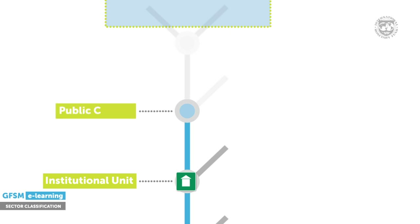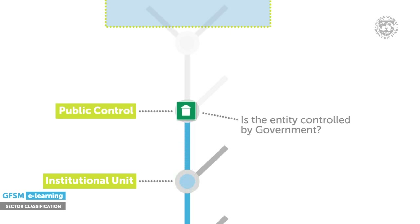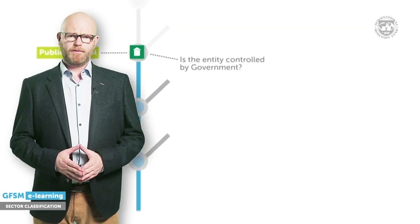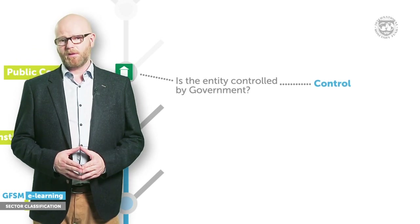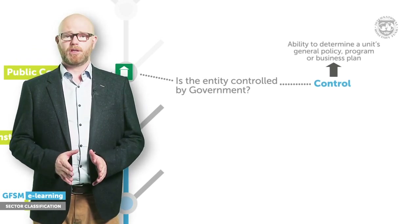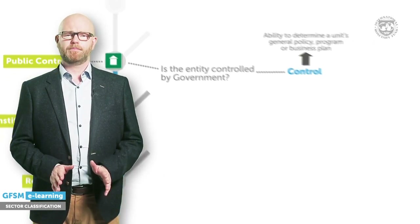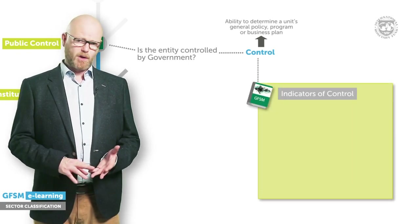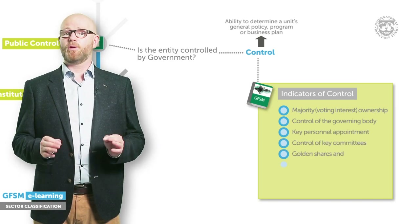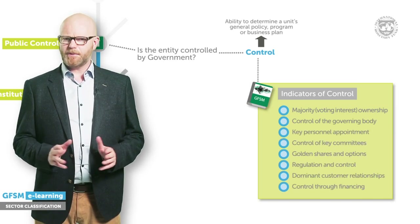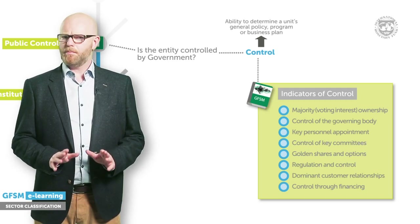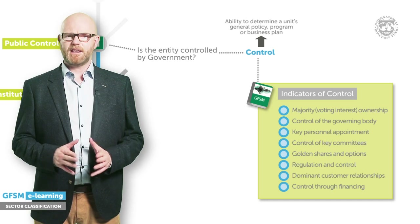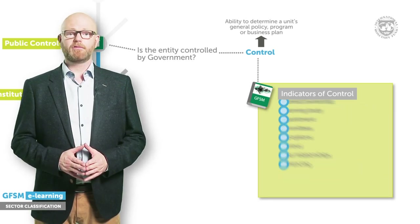Two further questions arise. First, is the institutional unit controlled, directly or indirectly, by a government? Only government-controlled units can be defined as part of the general government or the public sector. Control refers to the ability to determine a unit's general policy program or business plan. It is not the same as ownership — governments don't have to own an entity to be able to control it. GFSM provides a number of indicators of control. These include ownership, but also the ability to appoint directors, and control through regulation or through funding. In some cases, a single indicator may be sufficient to establish control, but most often all indicators will have to be assessed collectively. Borderline cases often require careful judgement.